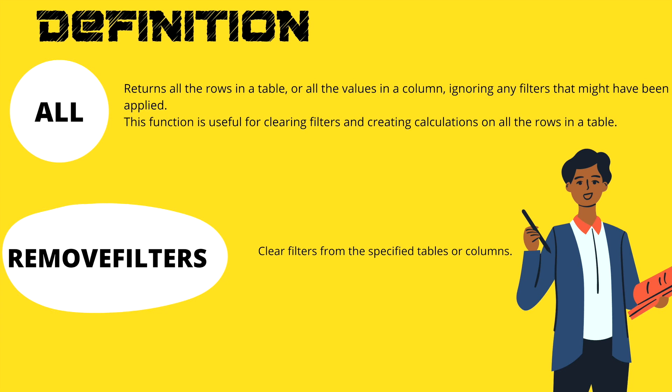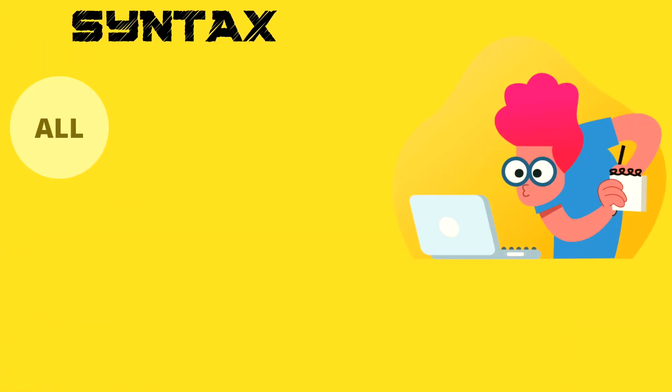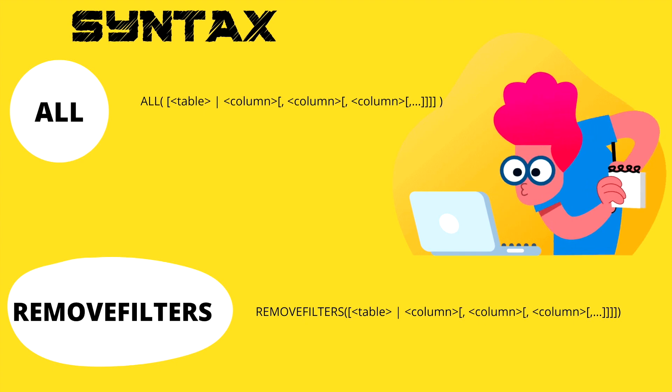So many times you need to remove filters from a table or from any column, and that's when you can use ALL. Similarly, REMOVEFILTERS is also there, which was introduced in 2019 after the ALL filter. It clears filters from the specified tables or columns, but there are substantial differences between these two which I'm going to explain in a while.